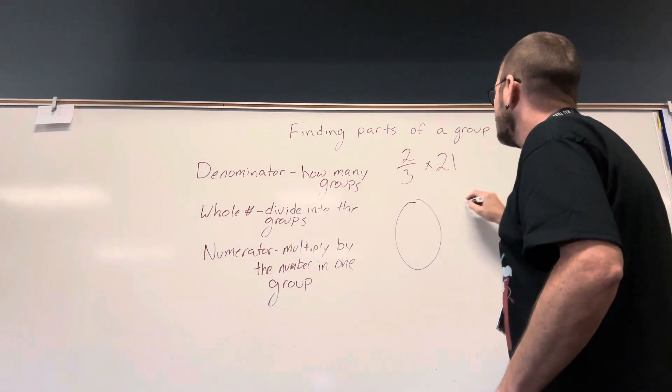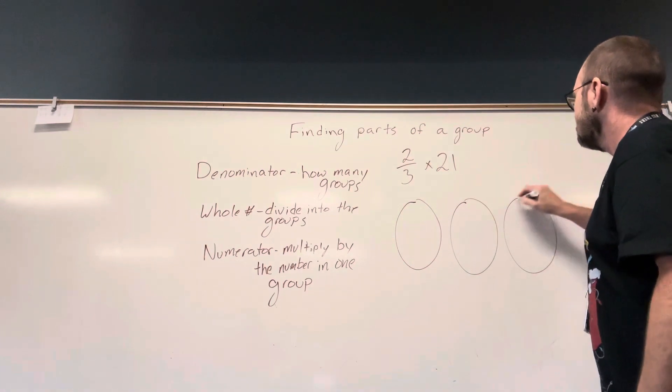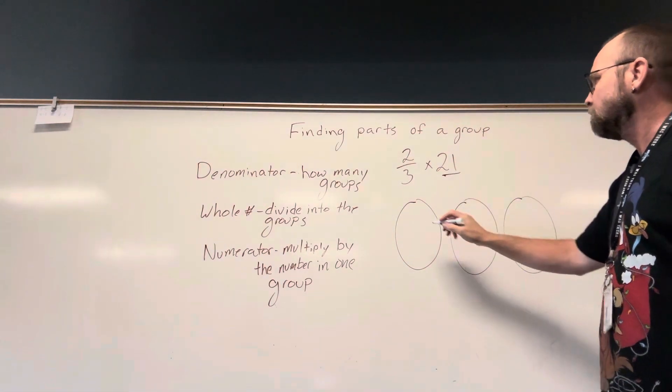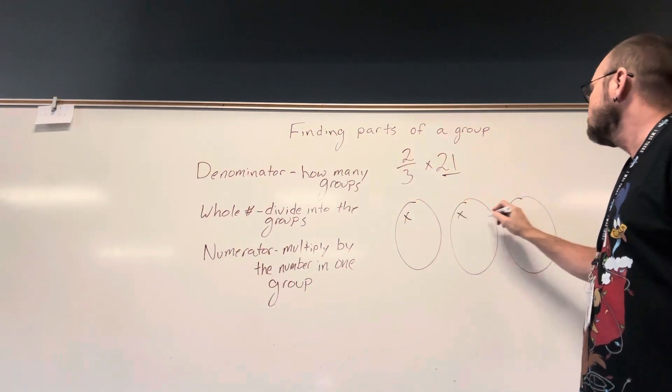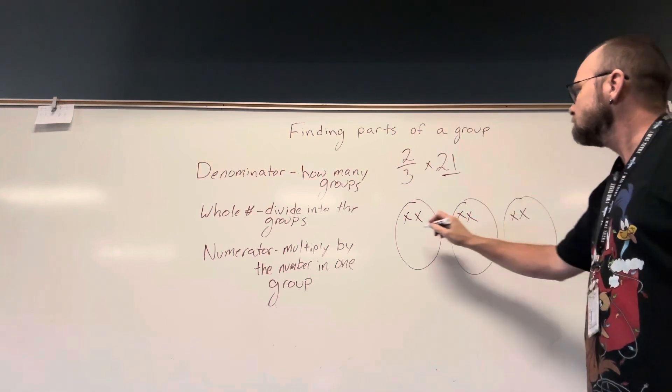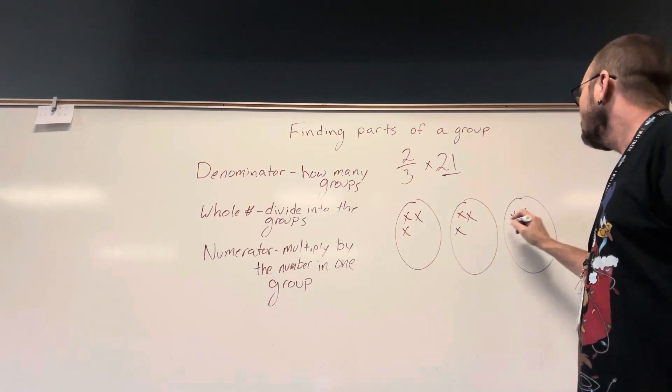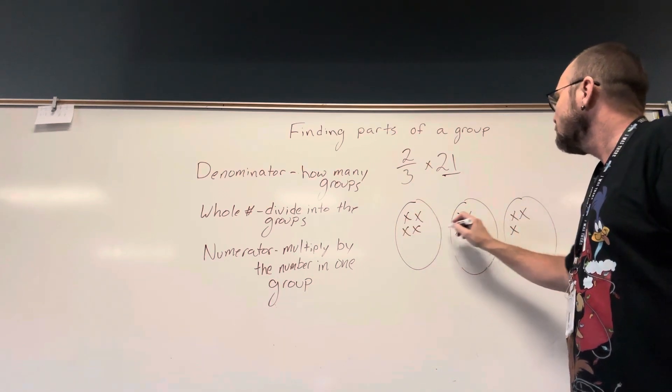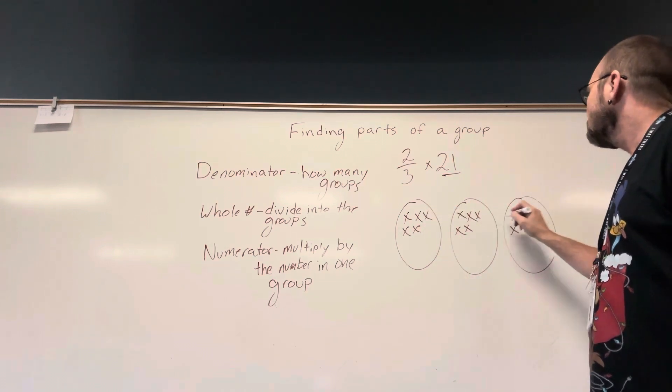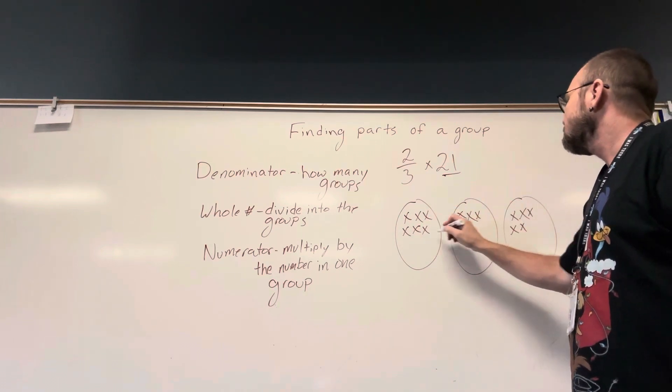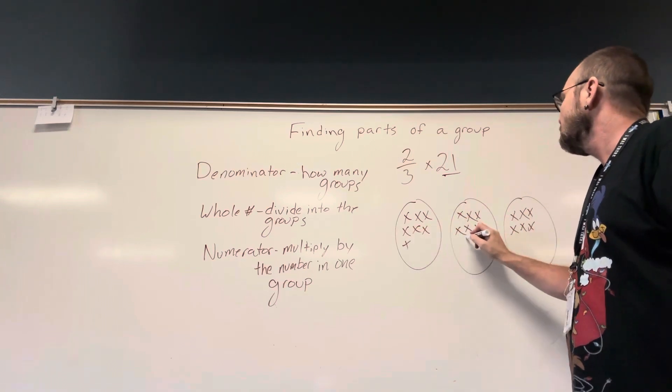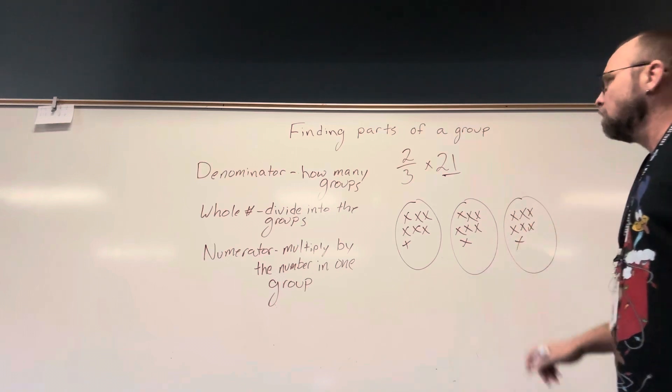Another way you might see the groups is like this. We've got three groups. And if we divide the twenty-one: one, two, three, four, five, six, seven, eight, nine, ten, eleven, twelve, thirteen, fourteen, fifteen, sixteen, seventeen, eighteen, nineteen, twenty, twenty-one.